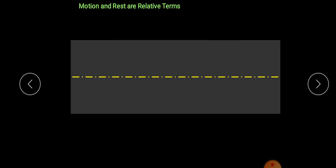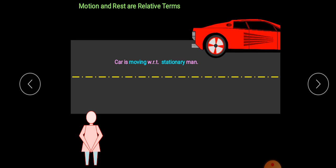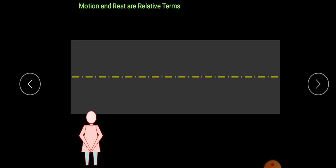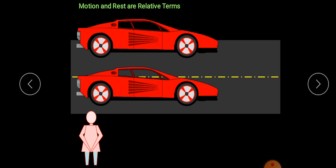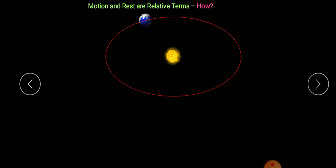Let us understand this more clearly. Suppose a person is there and a car is in motion with respect to the person. A second car is also in motion. Now both cars are moving together — with respect to the person both cars are moving, but with respect to each other both cars are at rest. In this way, motion and rest are relative terms.